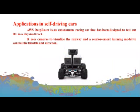In reinforcement learning, agents are trained on a reward and punishment mechanism. The agent is rewarded for correct moves and punished for wrong moves, so the agent always tries to minimize wrong moves and maximize right moves. The environment, reward, action, and interpretation form the core concept of reinforcement learning.